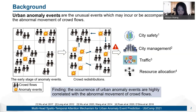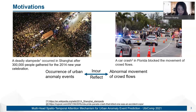But how do they correlate with each other? The abnormal movements of crowd flows are always accompanied with the occurrence of urban anomaly events. As shown in the figure on the left, a deadly stampede occurred in Shanghai while 300,000 people gathered for the 2014 New Year celebration. Also, the occurrence of anomaly events can lead to crowd flow redistribution. As shown in the figure on the right, a car crash involves the movement of crowd flows.